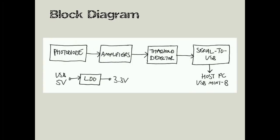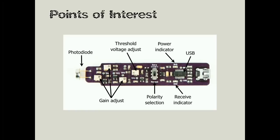So here's the block diagram — very simple. We have our photodiode front end, two stages of amplification, and then a threshold detector, which basically decides what level should be a logic level one and what should be a logic level zero. Then the serial to USB adapter, the USB connection, and a little power supply circuit. Very simple, but effective. You don't need to over-design stuff. It doesn't have internet connectivity, no Bluetooth, no iPhone app — it just does what it needs to do.